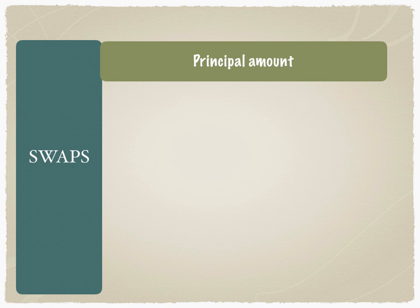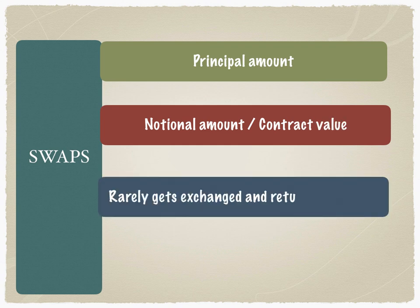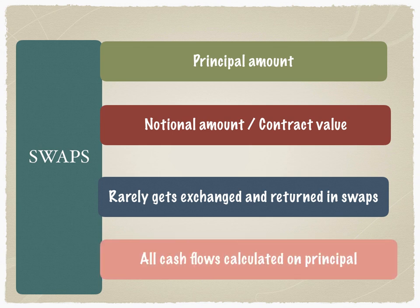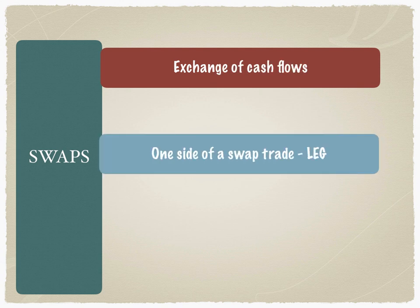Swaps have the following features. There is a principal amount attached to every swap, also called the notional amount or the contract value. But the principal amount never gets exchanged, either at the time the swap starts or at the time of swap maturity. The principal amount is used to calculate all the cash flows related to the swap. Therefore, a swap is an exchange of cash flows, and each side of a swap trade is called a leg.